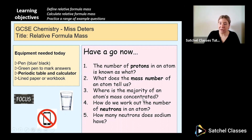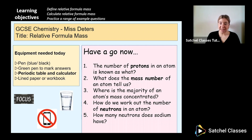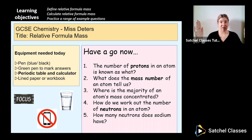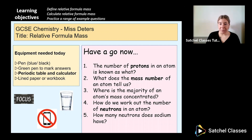Number three: where is the majority of an atom's mass concentrated? The location in the atom where the majority of mass is concentrated — hopefully you said nucleus. Number four: how do we work out the number of neutrons in an atom? You take the mass number, or the relative atomic mass, and you minus the atomic number.